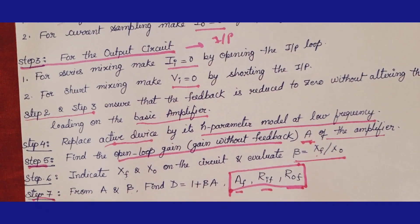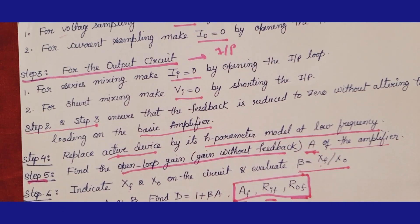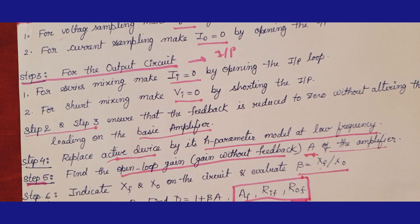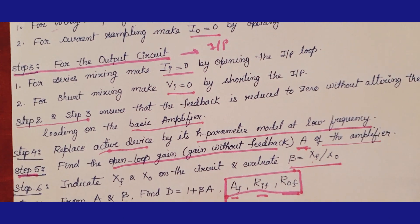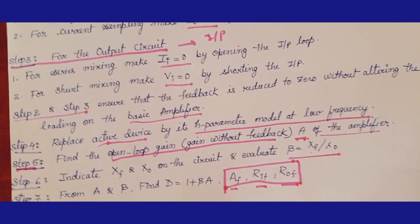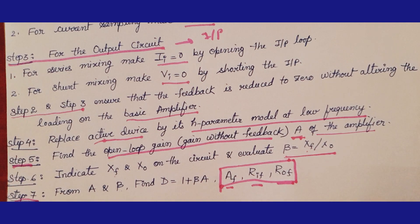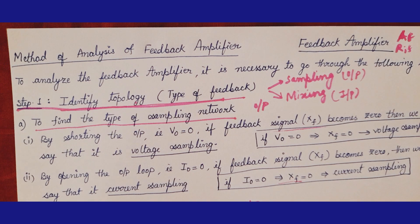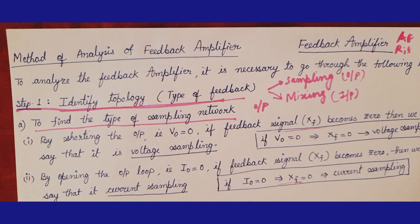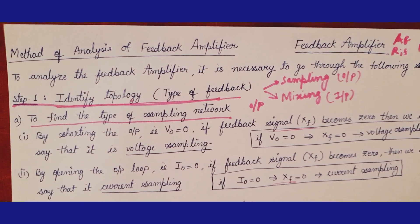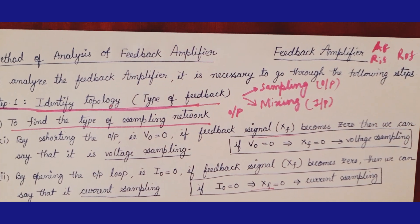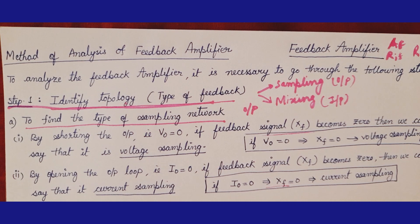To summarize, the 7 steps are: 1) identify the topology, 2) arrange the input circuit, 3) arrange the output circuit, 4) replace the active device with its H-parameter model at low frequency, 5) find the open loop gain A, 6) find beta, 7) find D, then compute Af, Rif, and Rof. In the next class we will take the voltage series feedback amplifier and do its analysis. For the topology method, refer to the previous classes.